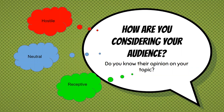When we're dealing with persuasion, we really have to consider our audience — your audience is probably your most important consideration. Do you know their opinion on your topic? You can have three types of audiences: neutral audiences who don't really care, receptive audiences who already agree with you and are positive about your topic or you, and then hostile audiences who either disagree with you as a person or are hostile towards the particular topic you are presenting.